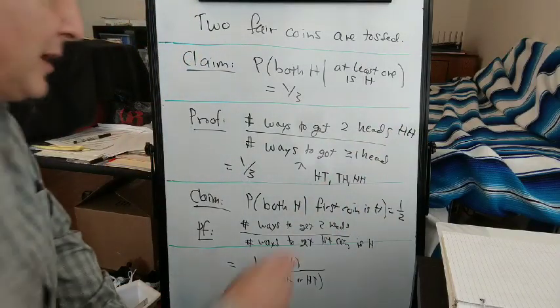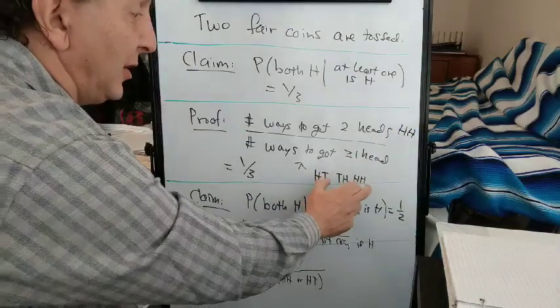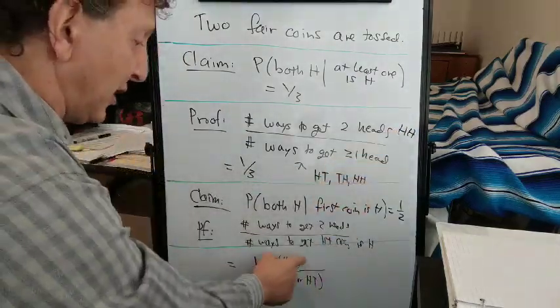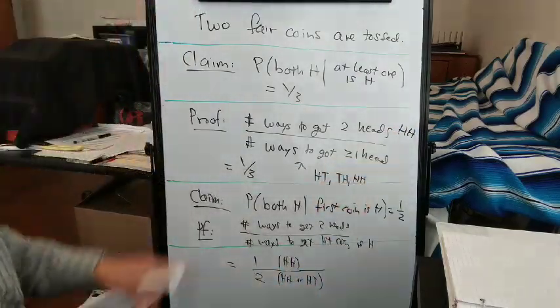And maybe this looks simple if we write out the possibilities. H, H over the number of these possibilities, one over three, or H, H over the number of these possibilities, one over two.